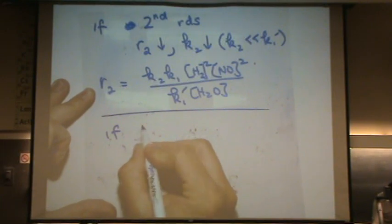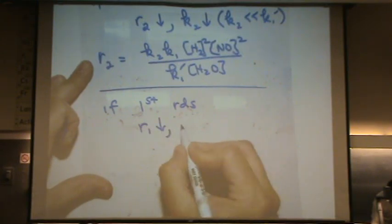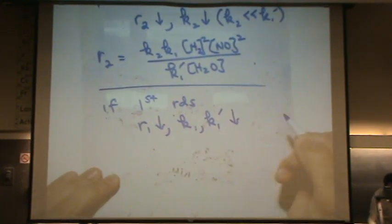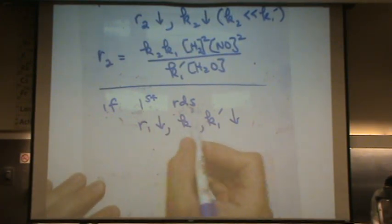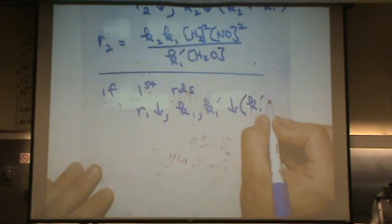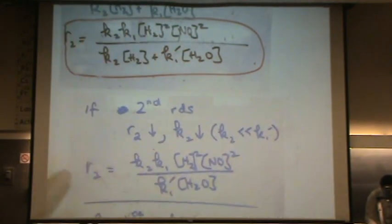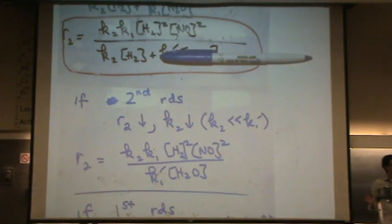If the first step is the rate determining step, that means rate one is tiny and so K1 and K1 prime are tiny. Does that make sense? The forward and reverse reaction are much slower for the first one. If this is the rate determining step, that means this is slow. So how it's going to be practical to us, here K1 prime is a lot smaller than K2. So if you go back up to your original equation,